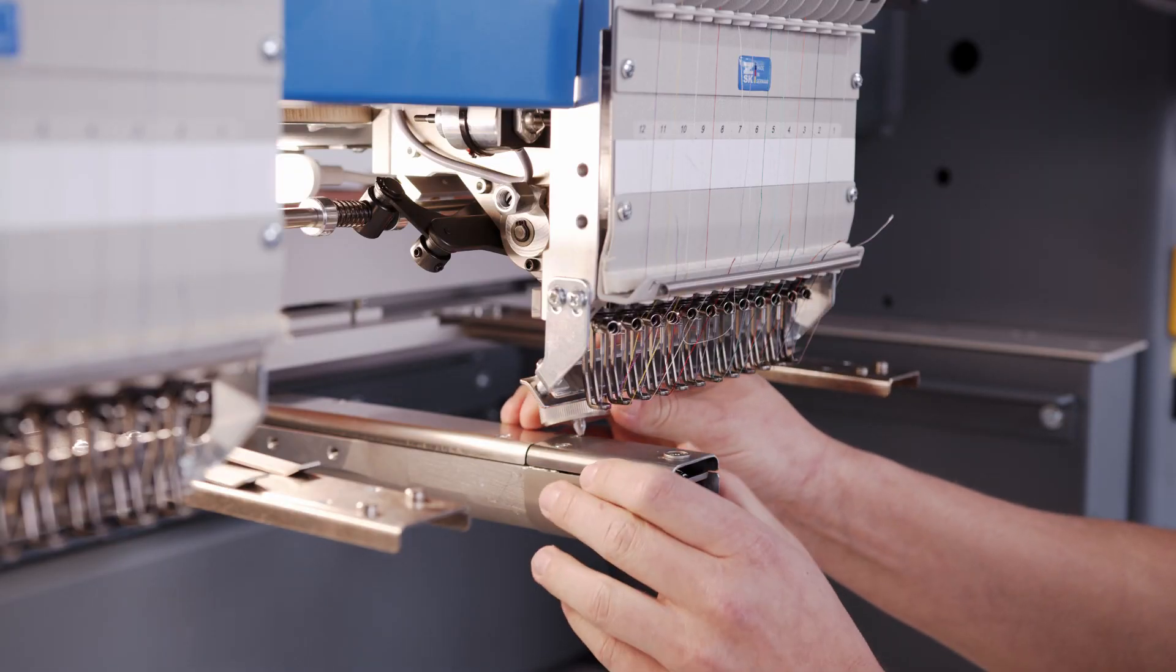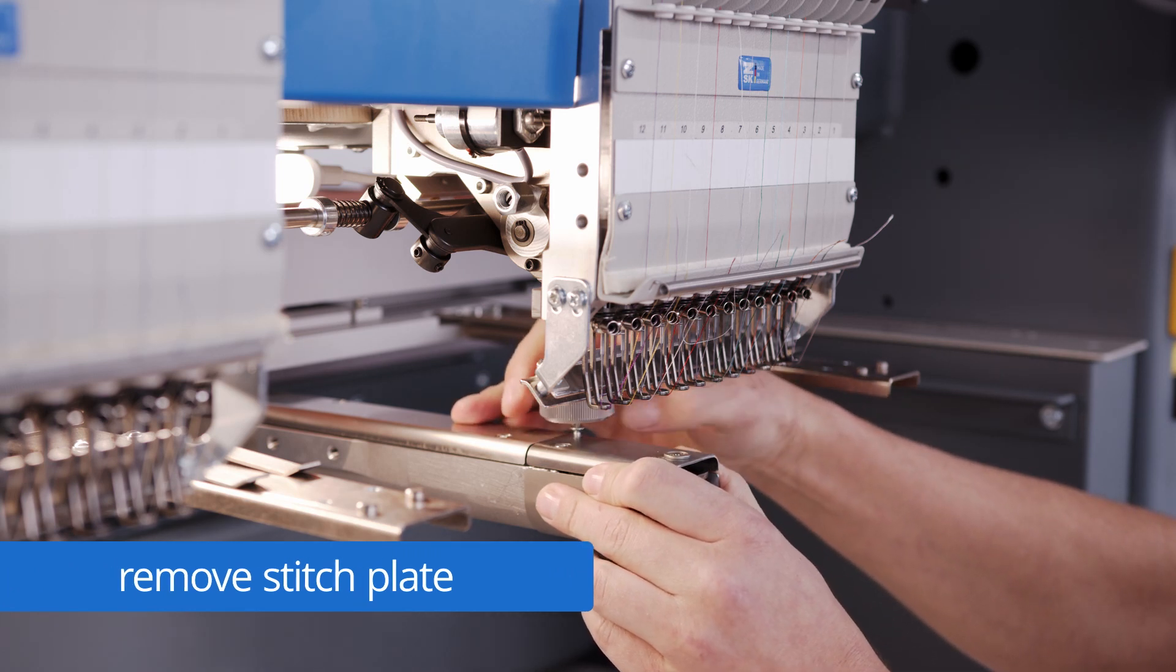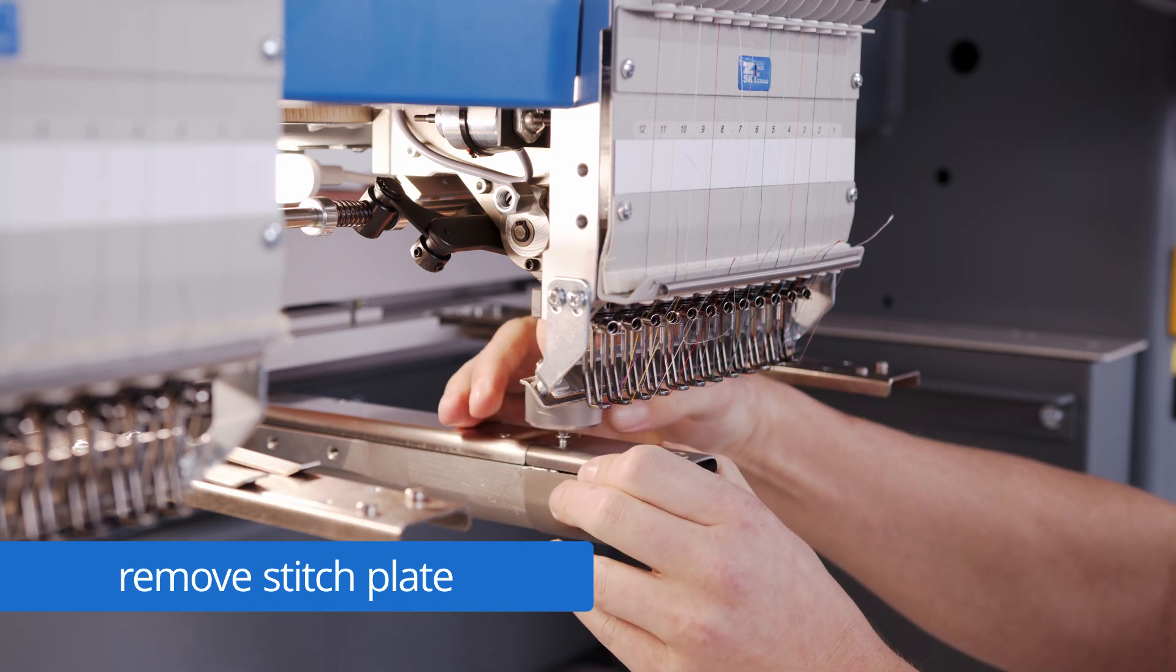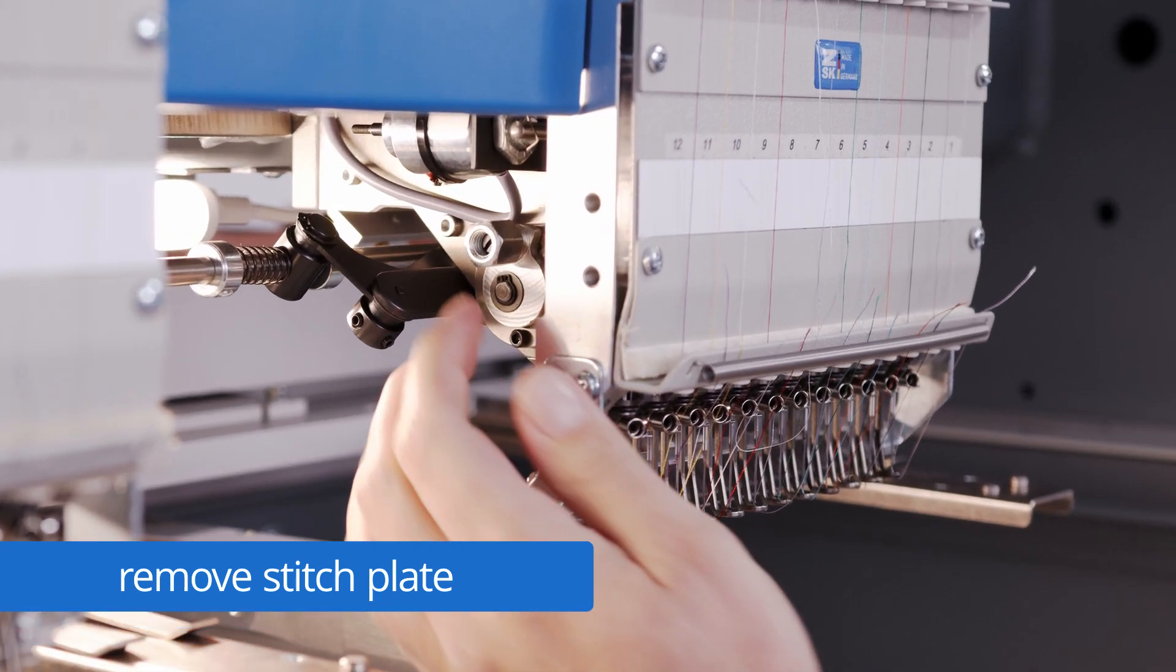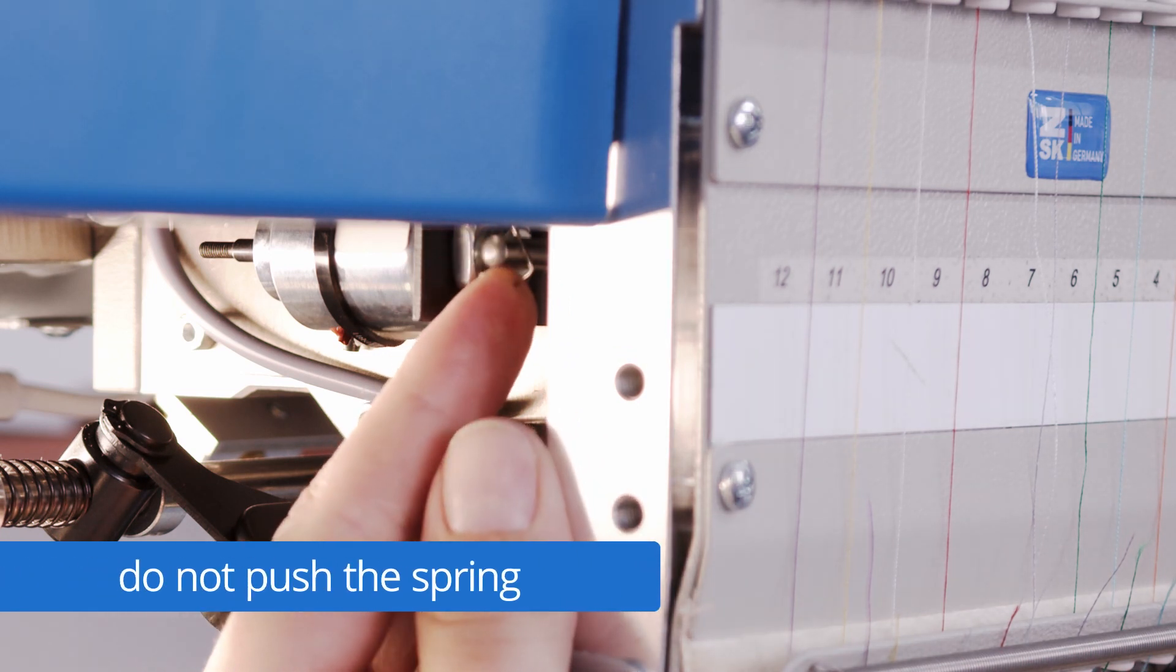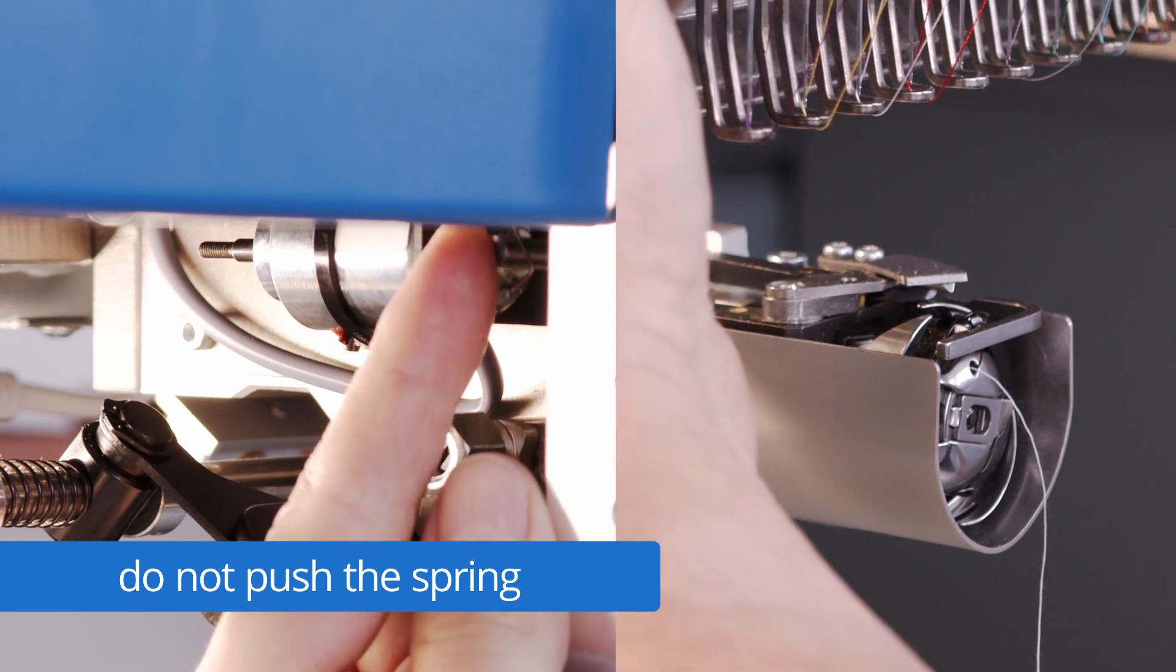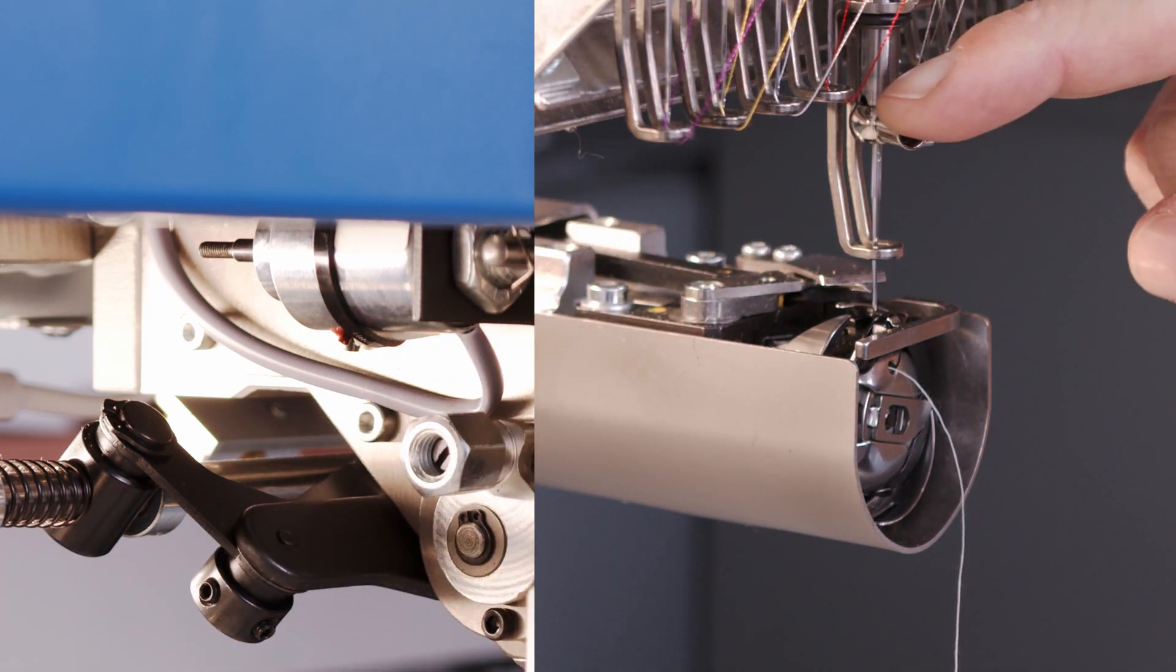Here we are removing the stitch plate. Therefore we have to loosen the two screws. Now we have to unlock the needle. Therefore we have to push at this pin here. Take care that you are not pushing the spring out of it. Just push here. The needle falls down. We can push the needle down completely.